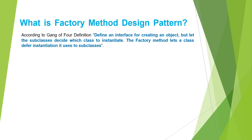According to the Gang of Four definition, the factory method design pattern states: define an interface for creating an object, but let the subclasses decide which class to instantiate. The factory method lets a class defer instantiation to its subclasses.